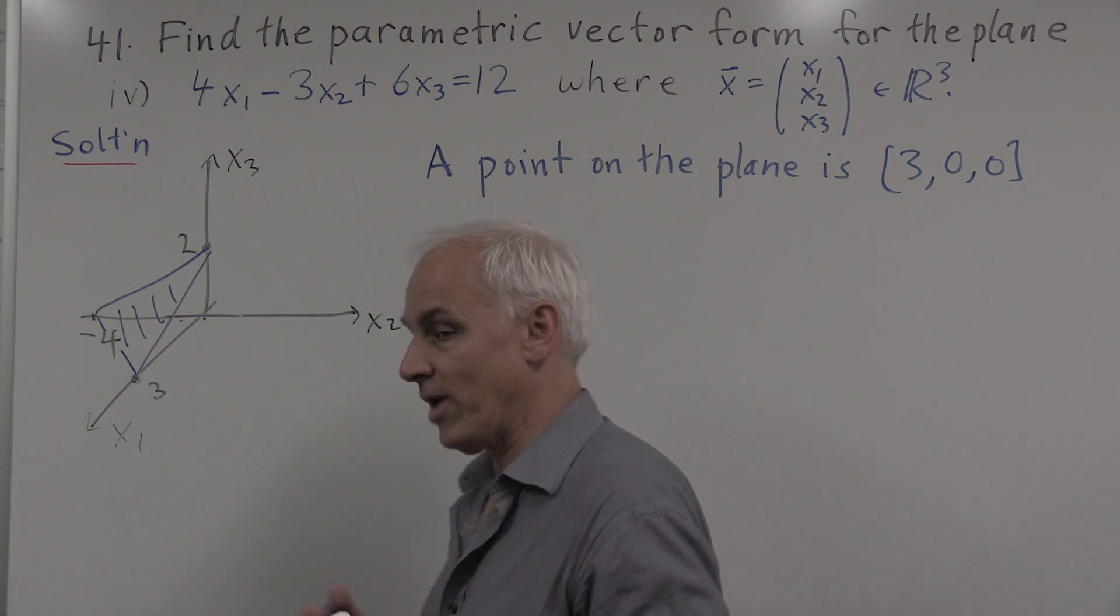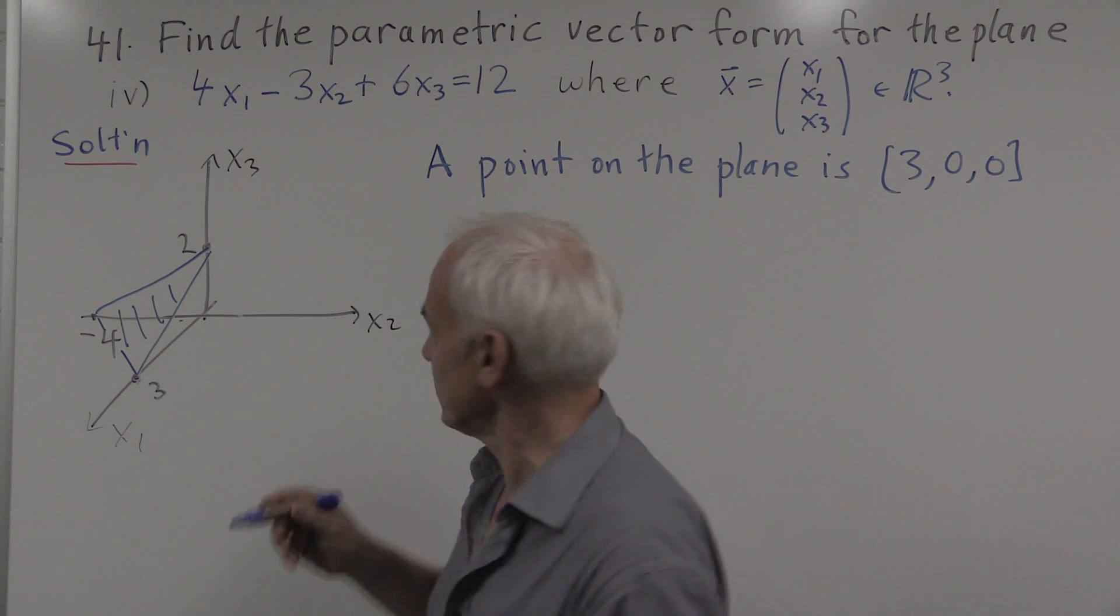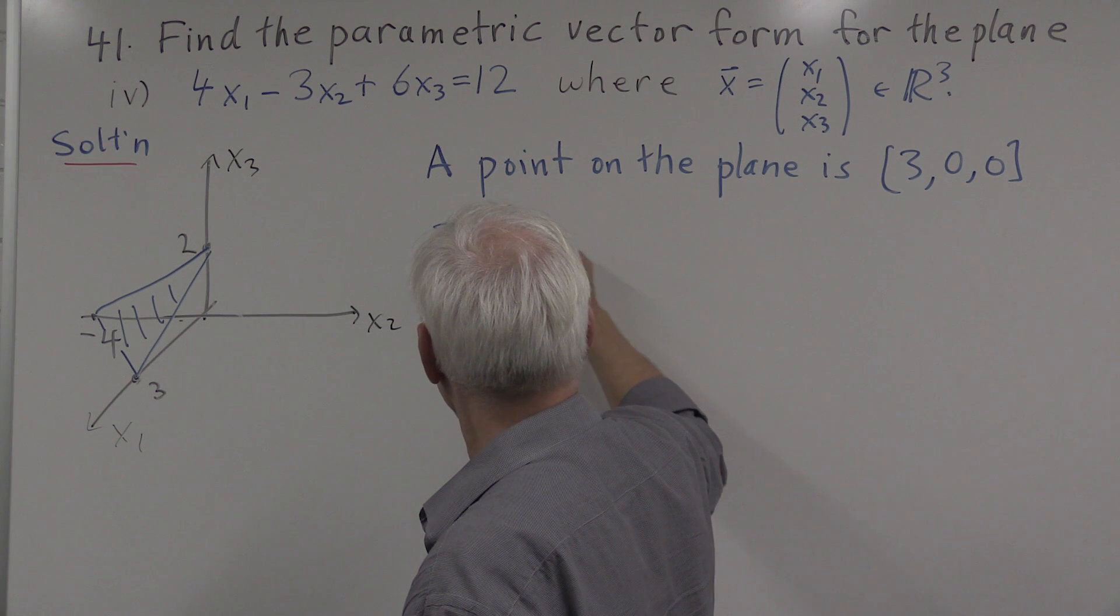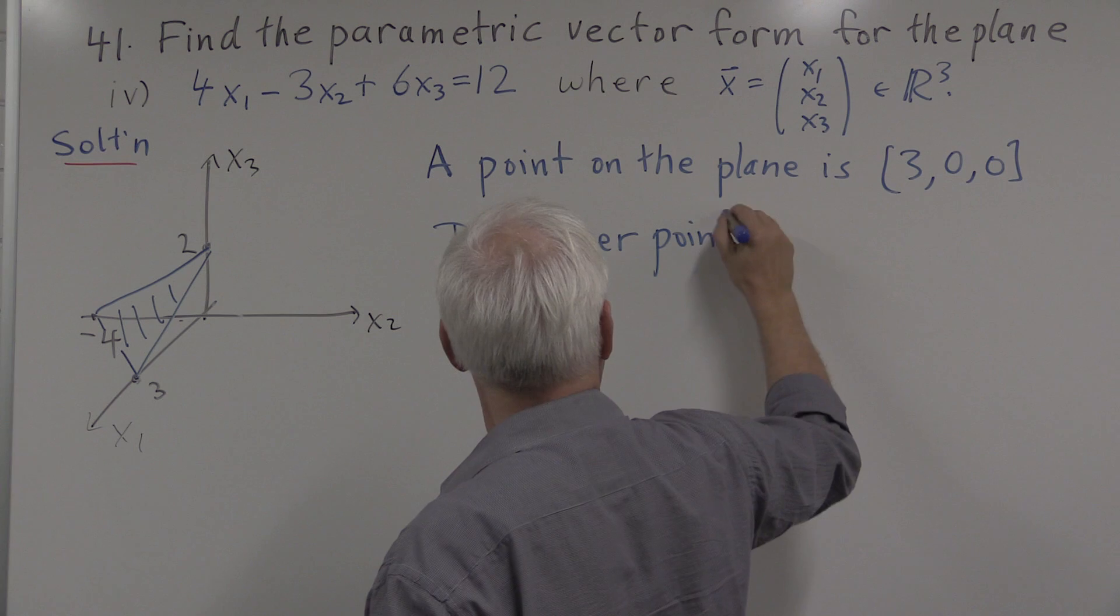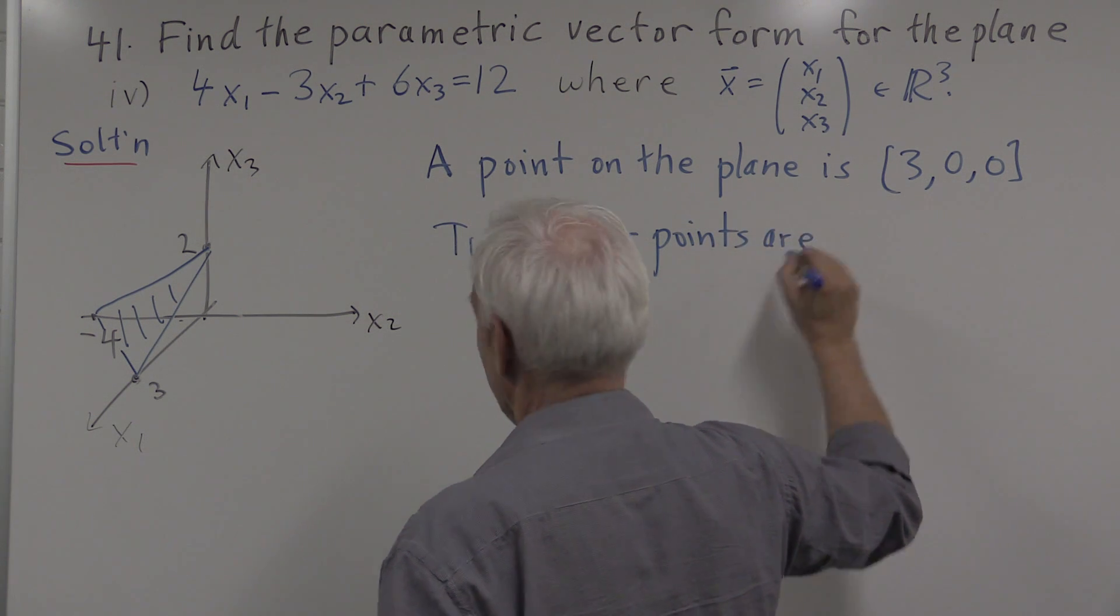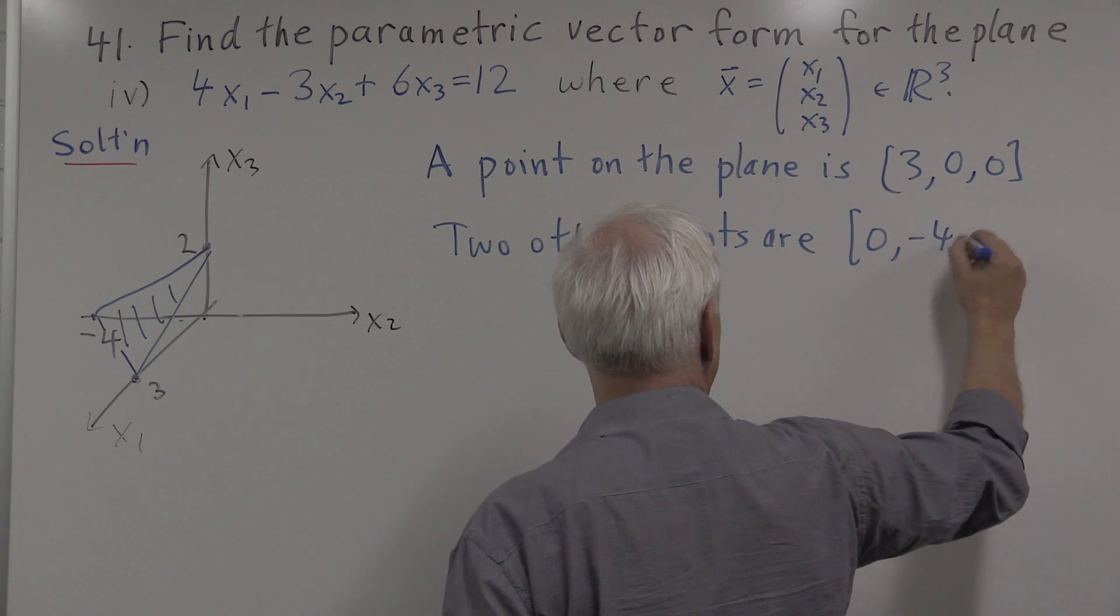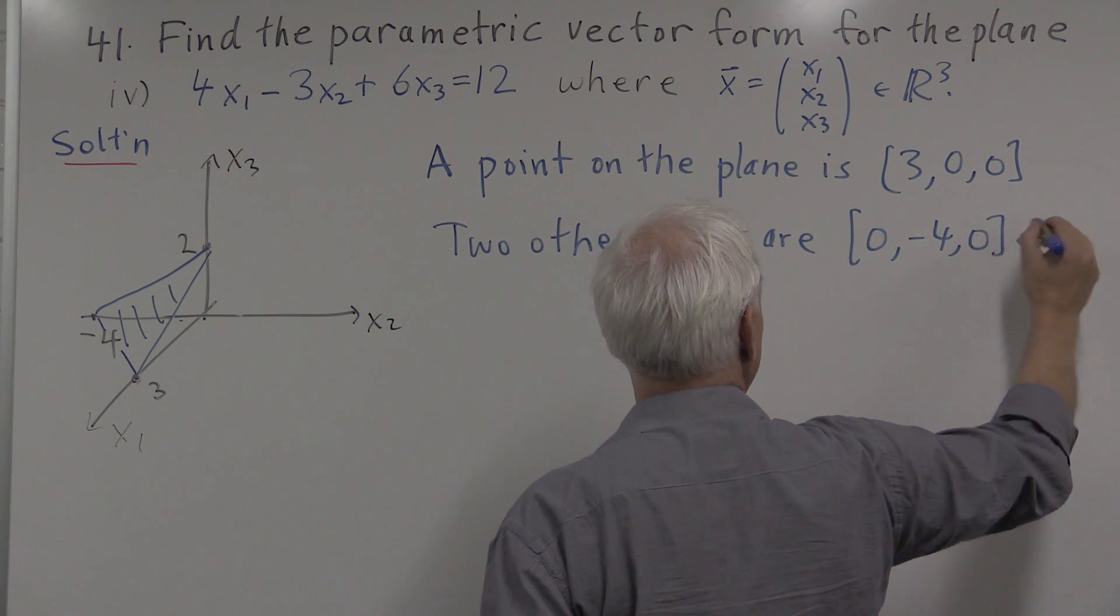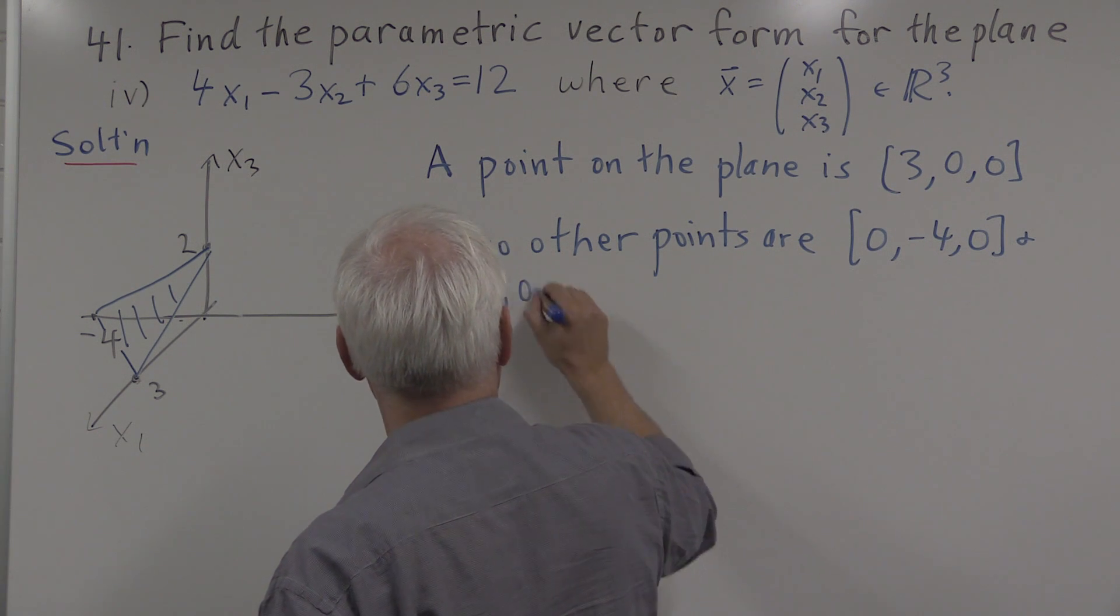What about direction vectors? Well, for direction vectors, we really need two other points. So two other points are, the next one that we got was zero, minus four, zero, and zero, zero, two.